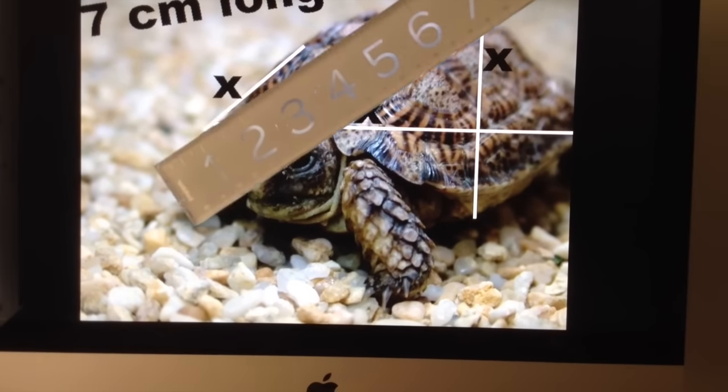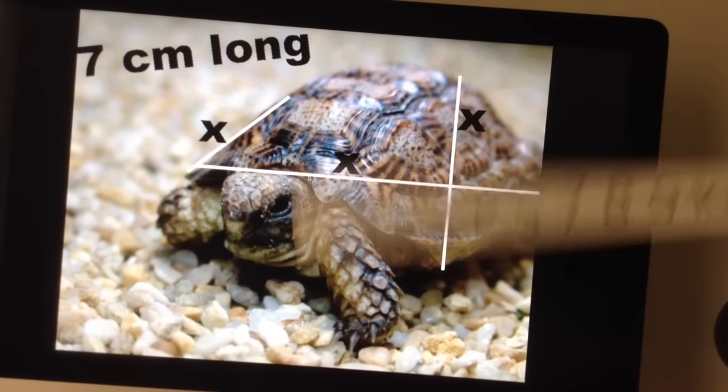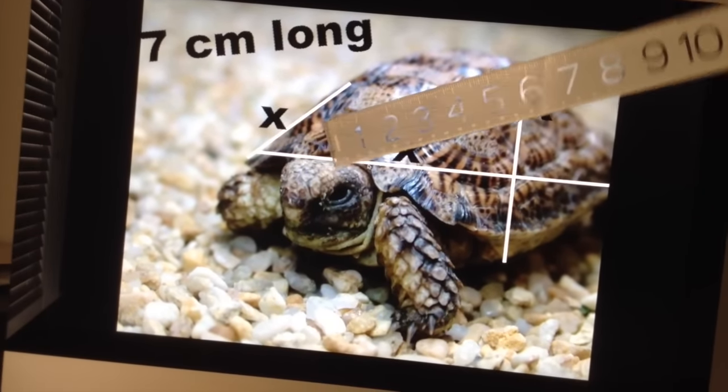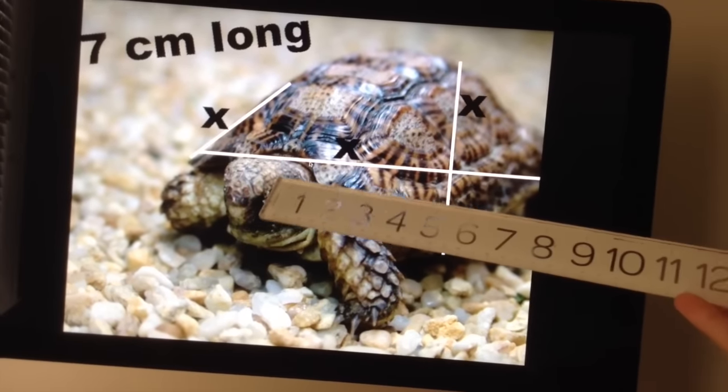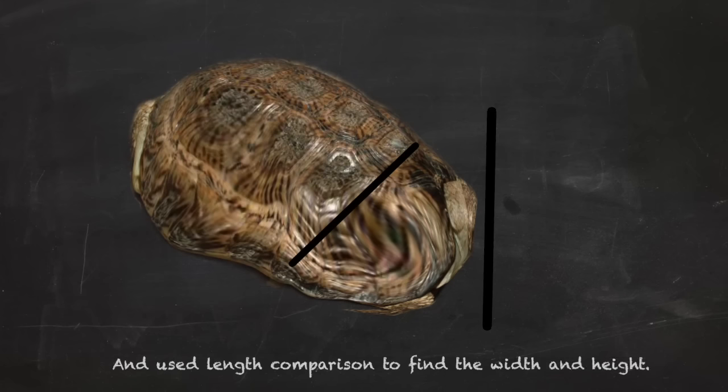What happened next was beyond tedious for me. I grabbed a large ruler and started measuring the screen of my computer to find out how many inches on the ruler equaled his real-life 7cm length. I also then measured how tall the turtle was and how wide, and used length comparison to deduce an answer to the other two.